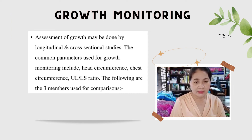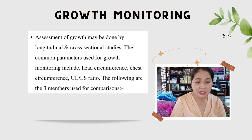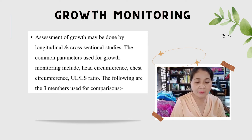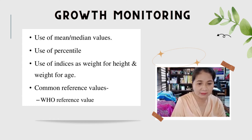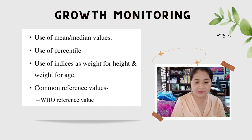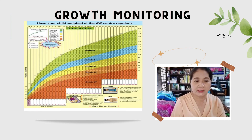Growth monitoring: Assessment of growth may be done by longitudinal and cross-sectional studies. Common parameters used for growth monitoring include head circumference, chest circumference, and upper-to-lower segment ratio. The three methods used for comparisons are: use of mean and median values, use of percentile, and use of indices such as weight for height and weight for age. It is recommended to have your child weighed at the health center regularly.